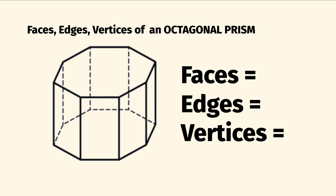So that's two so far. We can also go around and count 1, 2, 3, 4, 5, 6, 7, 8 flat surfaces as we go around joining these two octagons together. So 8 plus 2 means that we have 10 faces on an octagonal prism.